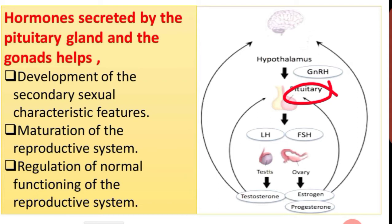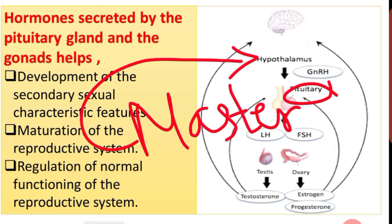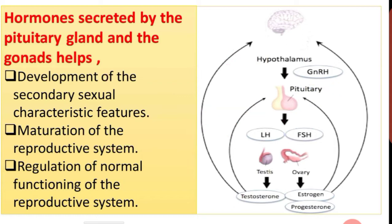Though the pituitary gland is the master gland, that master gland is ruled by the hypothalamus. How it controls the pituitary gland? With the help of releasing factors and inhibiting factors. Hypothalamus secretes factors, and with the help of these factors it controls the pituitary gland.